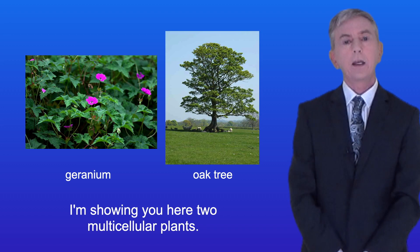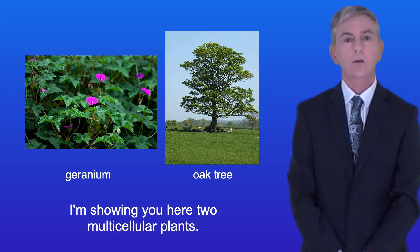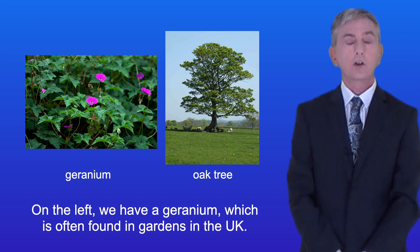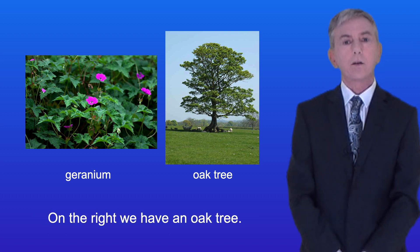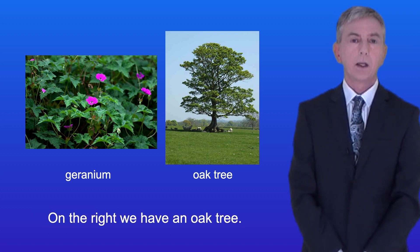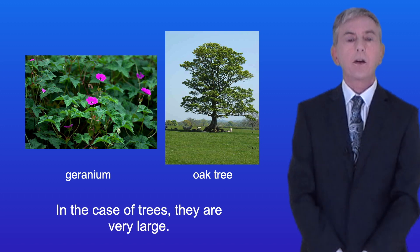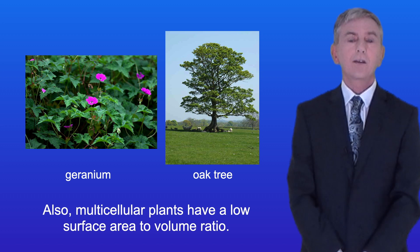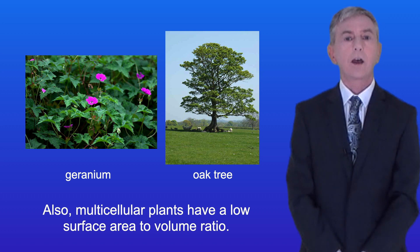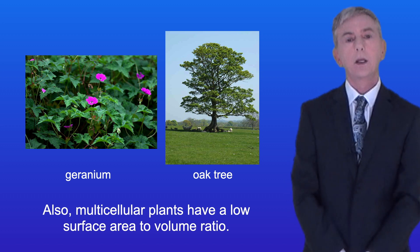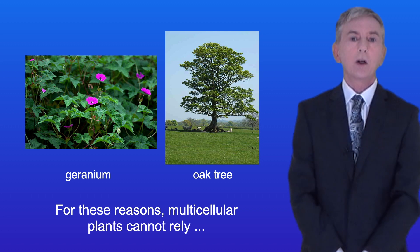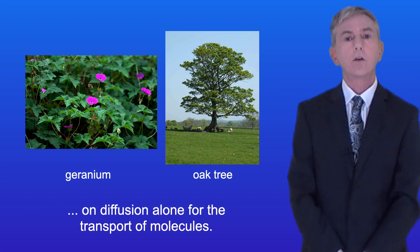I'm showing you here two multicellular plants. On the left we have a geranium which is often found in gardens in the UK, and on the right we have an oak tree. Now as you can see multicellular plants are large, and in the case of trees they're very large. Also multicellular plants have a low surface area to volume ratio, so for these reasons multicellular plants cannot rely on diffusion alone for the transport of molecules.